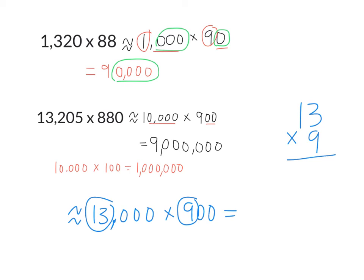What is 13 times 9? Well, 9 times 3 is 27. 9 times 1 is 9. Plus 2 is? 11. So, 13 times 9 is 117. And then we can see, well, over here, it's 13,000, so there's three zeros. And 900, so there's two zeros. So, our final answer should have how many zeros? Six zeros. How many zeros? Five. Five zeros. One, two, three, four, five. So, you can see, then we have 11,700,000.